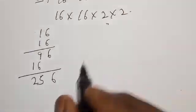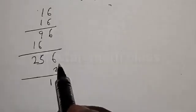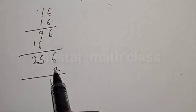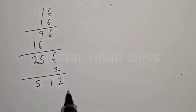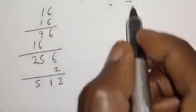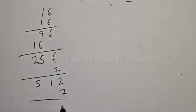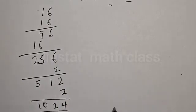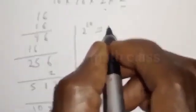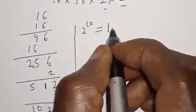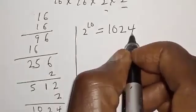Now let's multiply 256 by 2: 2 times 6 is 12, write 2 carry 1; 2 times 5 is 10 plus 1 is 11, write 1 carry 1; 2 times 2 is 4 plus 1 is 5. That gives 512. Then multiply 512 by 2: 2 times 2 is 4; 2 times 1 is 2; 2 times 5 is 10. Therefore, 2 raised to power 10 is equal to 1024.